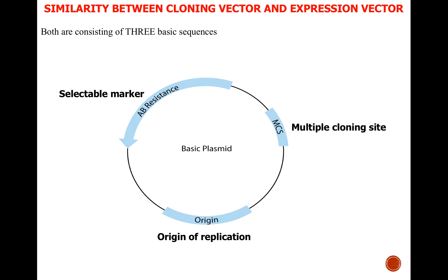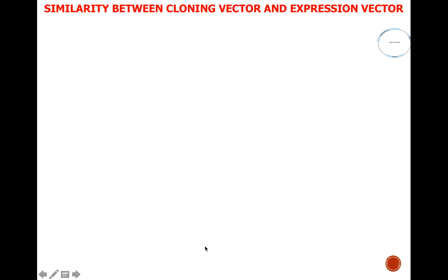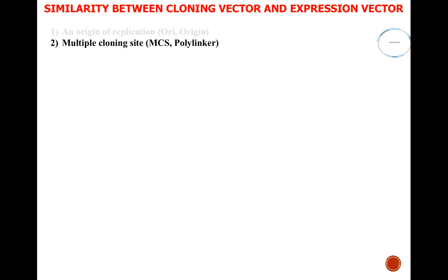Let's start with the similarities between cloning vector and expression vector. Both consist of three basic sequences: a selectable marker, multiple cloning site, and origin of replication. An origin of replication is a sequence necessary for replication of the plasmid independently from the host's chromosomal DNA. The multiple cloning site contains a number of unique recognition sites for restriction enzymes for insertion of your foreign gene of interest.